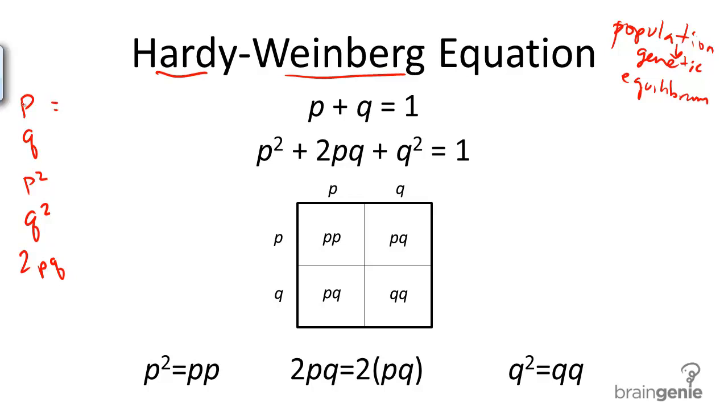p, the small p variable, represents the frequency of the dominant allele.